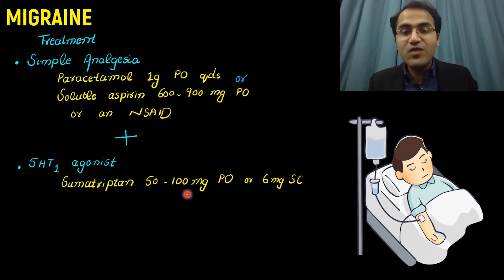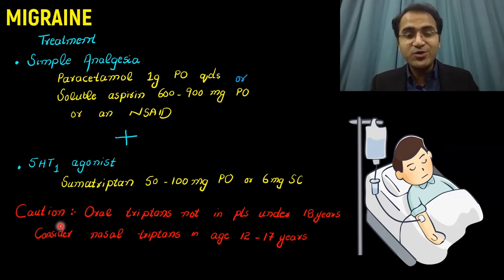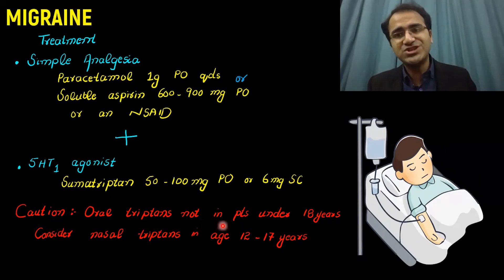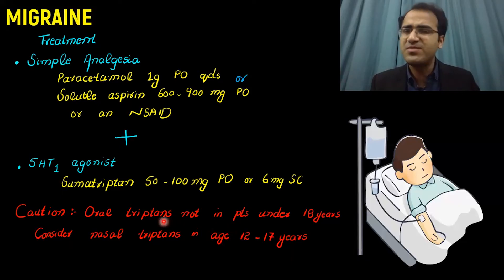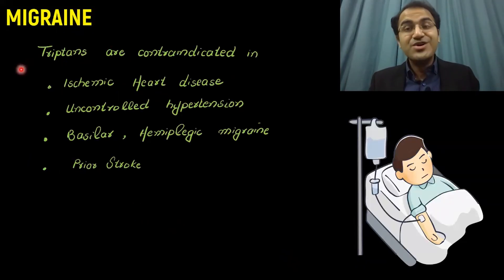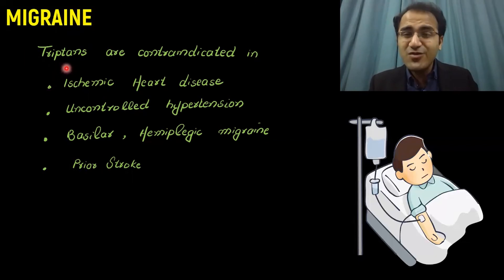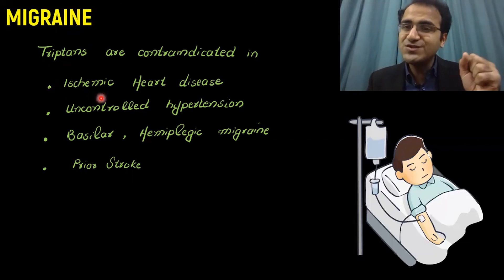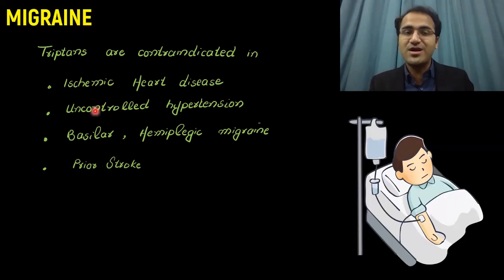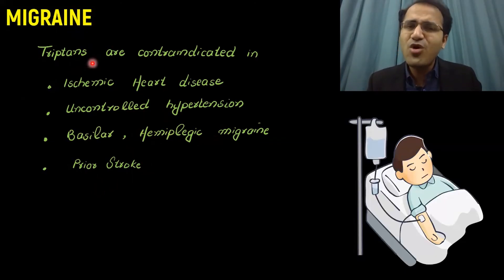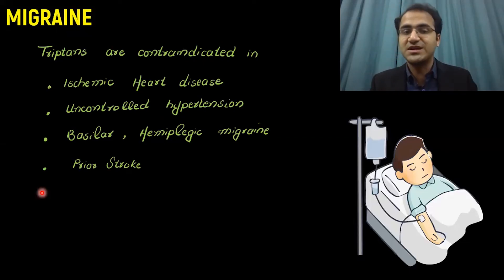Sumatriptans are given 50 to 100 mg orally or 6 mg subcutaneously. One important point: oral triptans are not recommended in patients under 18 years of age — in the pediatric group, oral triptans have no efficacy. Triptans cause vasoconstriction, so they are contraindicated in ischemic heart disease, uncontrolled hypertension, basilar or hemiplegic migraine, and prior strokes — in all conditions where you do not want further vasoconstriction.